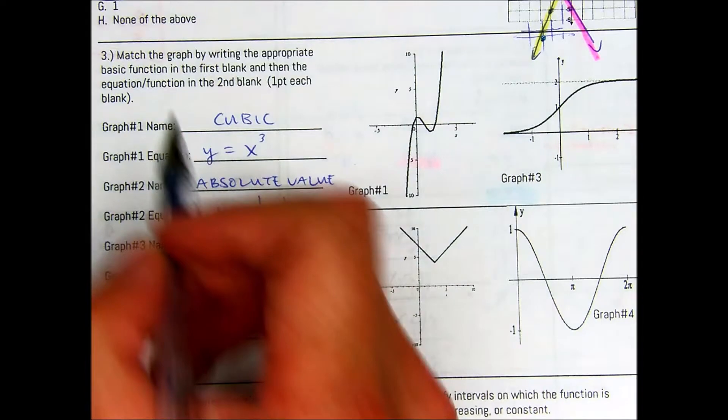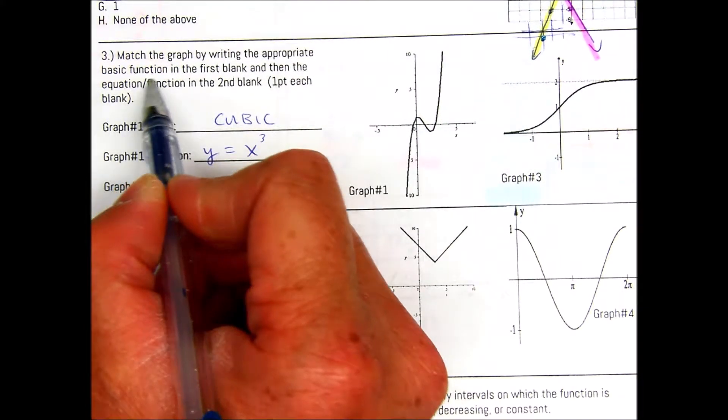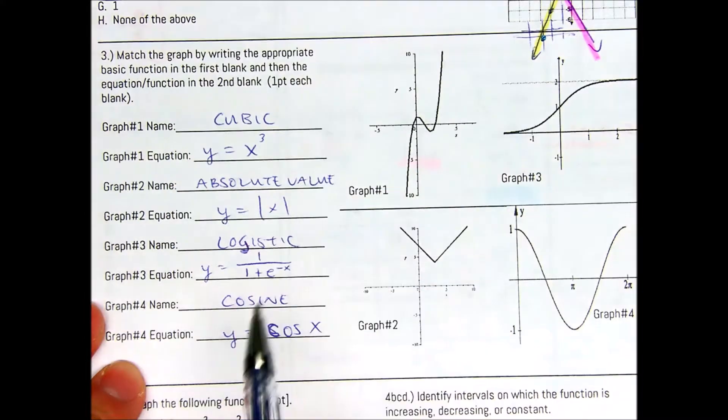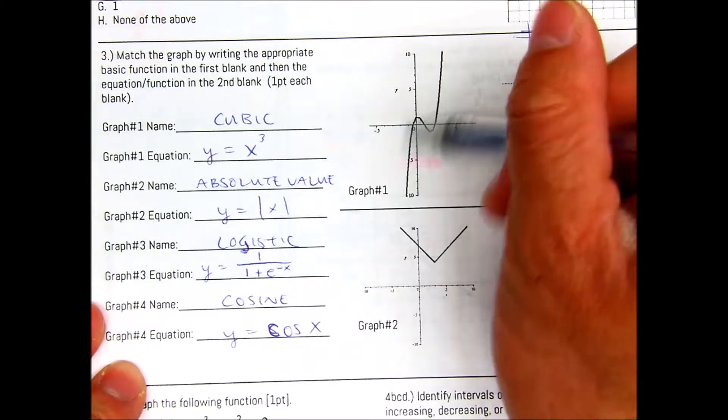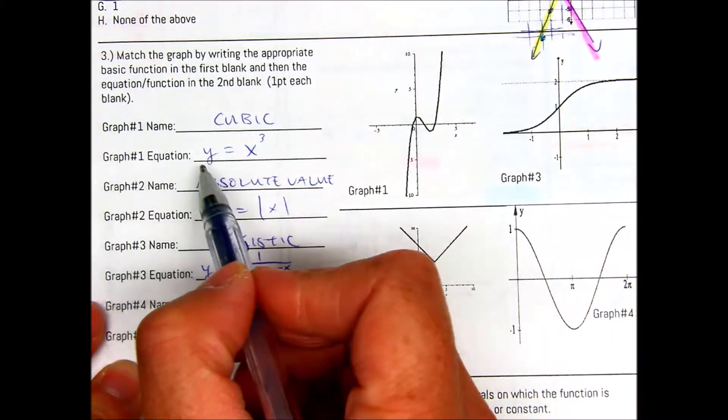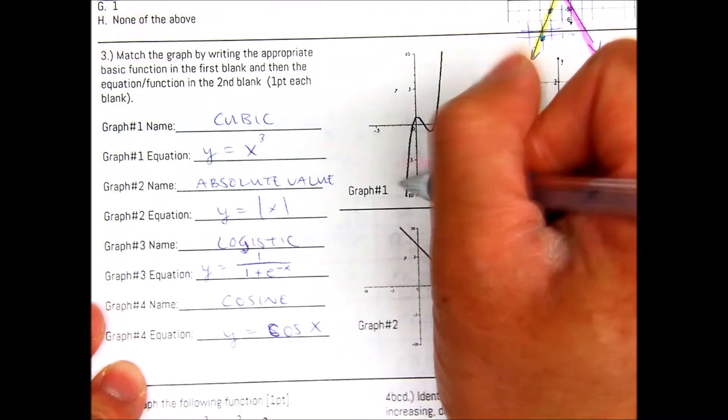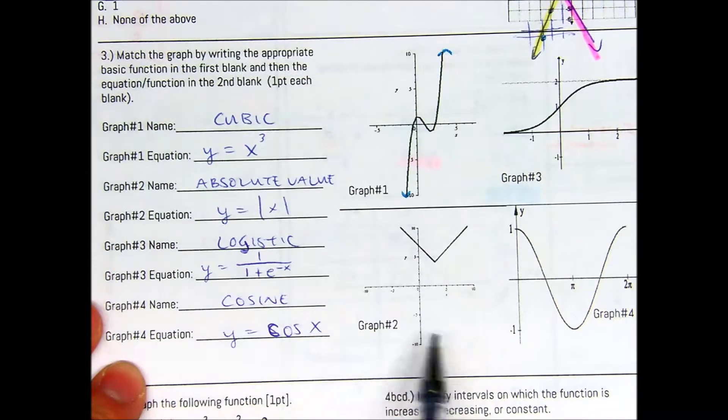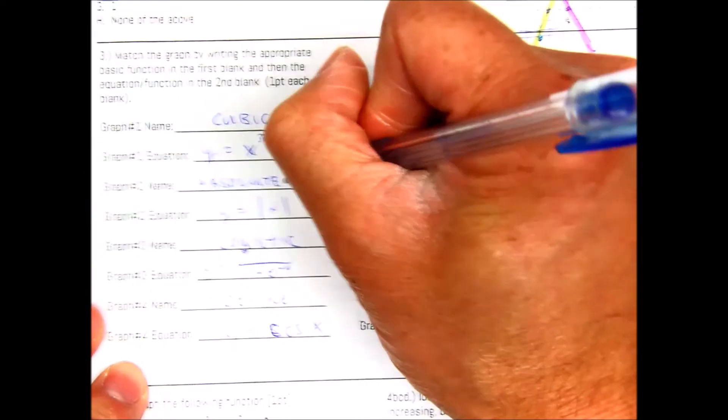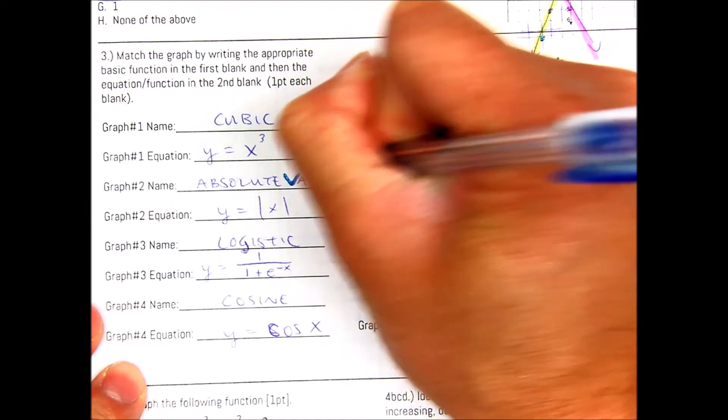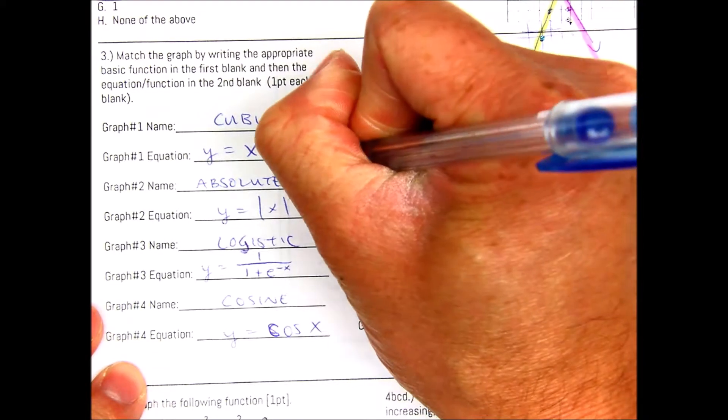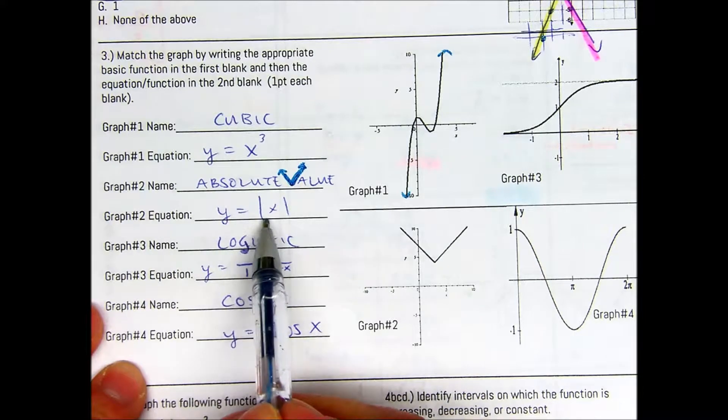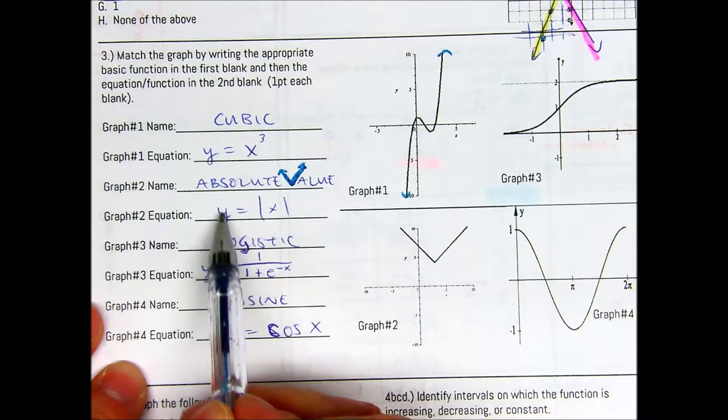Question number three: match the graph by writing the appropriate basic function in the first blank, and then the equation or function in the second blank. These are one point each. So graph number one, this is a cubic function. The equation is y equals x to the third. So it's an odd degree, starts down, ends up. Graph number two - remember the V's is the absolute value. Absolute value function is y equals absolute value of x. Again, you could have had something like f(x) as well.